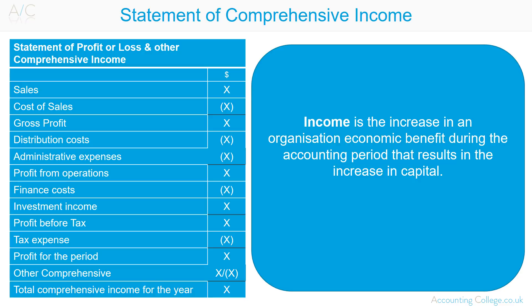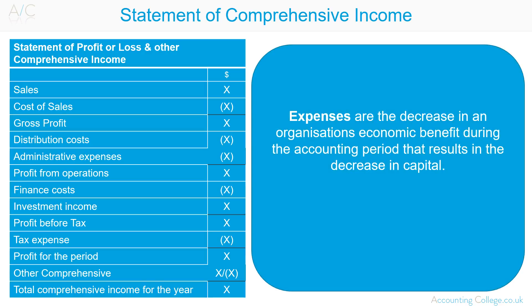Revenue represents the earnings of an organisation through its ordinary activities, and gains represents all other items of income. Expenses are the decrease in an organisation's economic benefit during the accounting period that results in the decrease in capital. This can be in the form of direct outflows of cash, depletion of an asset, or the increase of a liability.